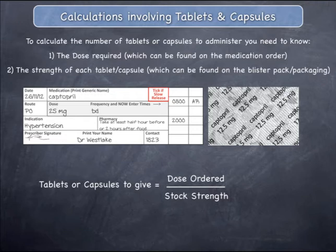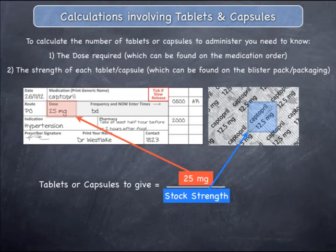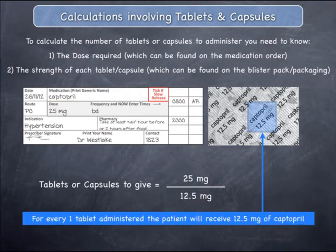Let's now replace each of these quantities with their actual values by reading the medication order and the strength of the medication. The dose that has been ordered can be read directly from the medication order from the box called dose. The dose box specifies how much active medication the patient must be given in each dose — in this case, it is 25 milligrams. The stock strength can be found on the packaging of the medication, or preferably on the blister pack itself. In this case, it is 12.5 milligrams. The required calculation is shown. The strength of the medication specifies how much active medication — in this case Captopril — is contained in one tablet or capsule.